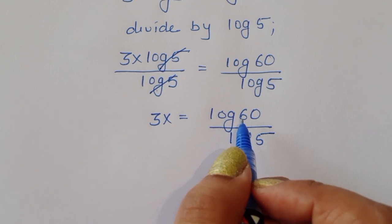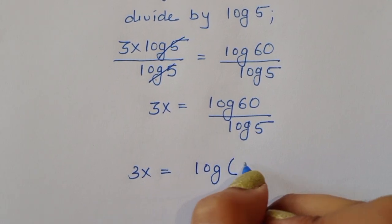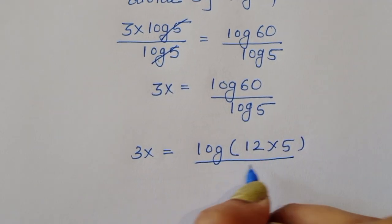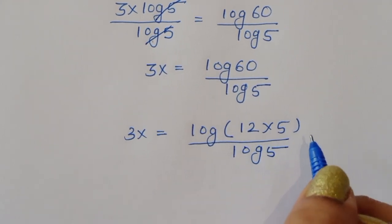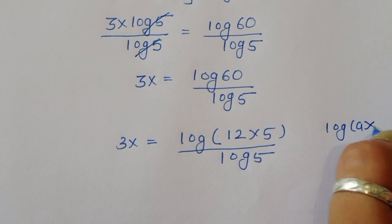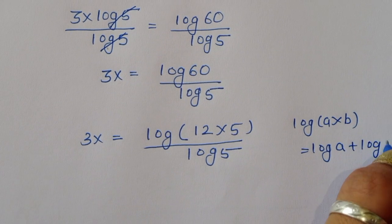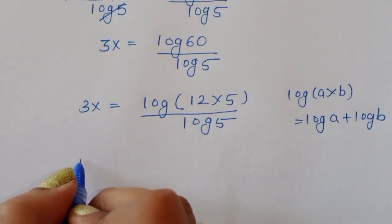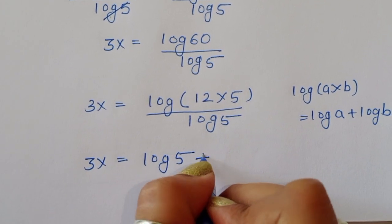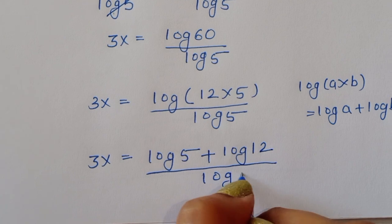Now we convert 60 as 5 times 12. So we have log(5 × 12) divided by log(5). Using the formula log(a × b) = log(a) + log(b), we can write 3x is equal to log(5) plus log(12), all divided by log(5).